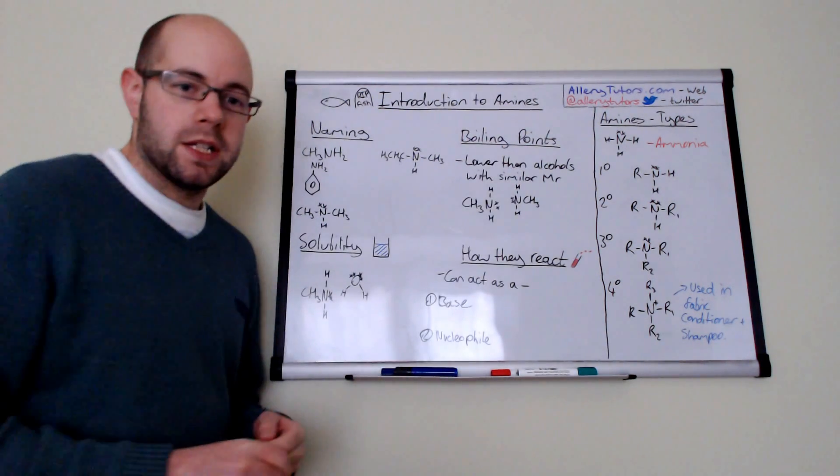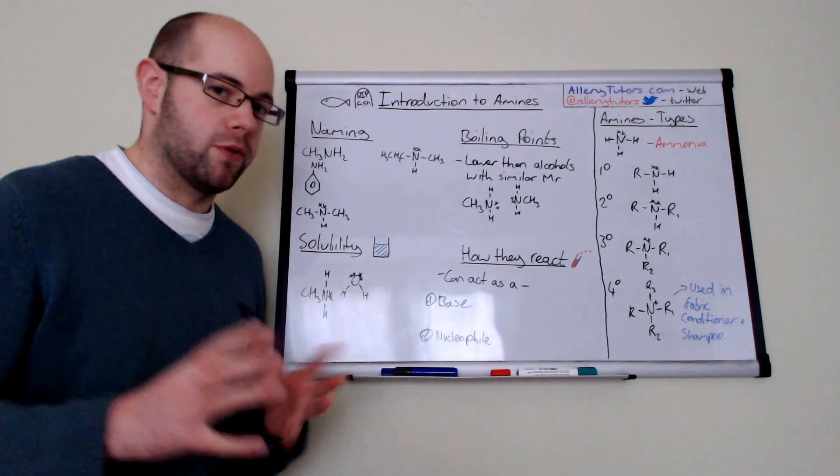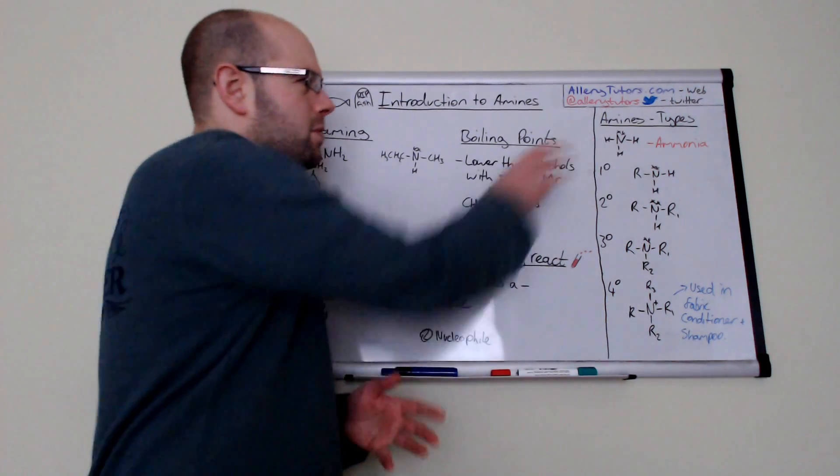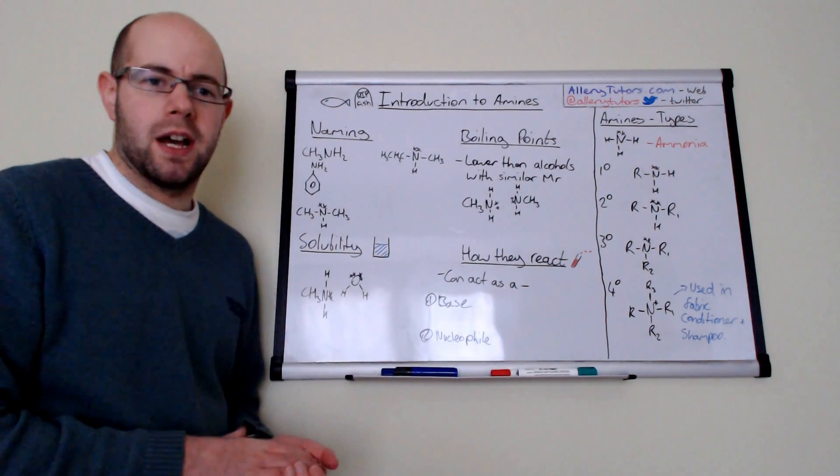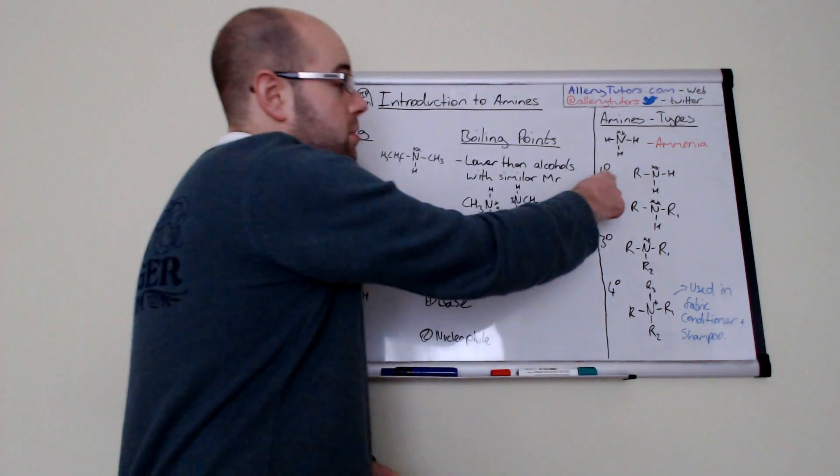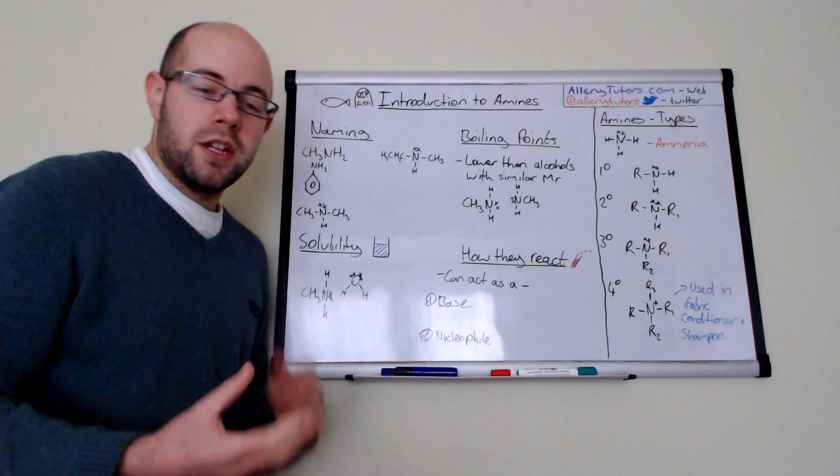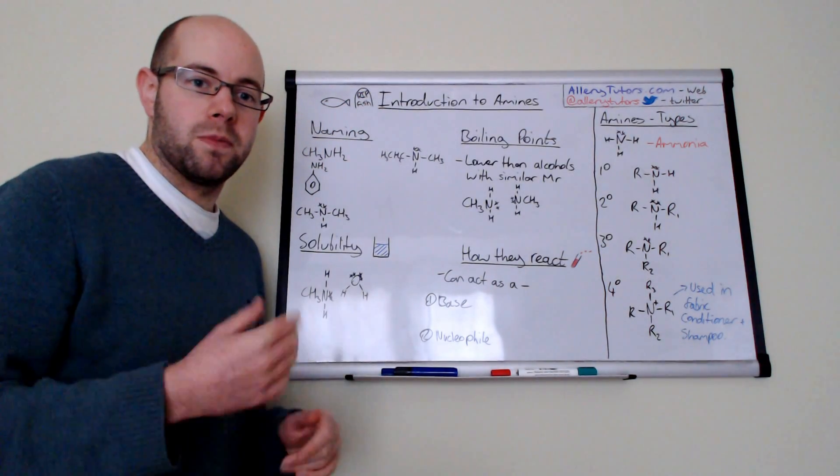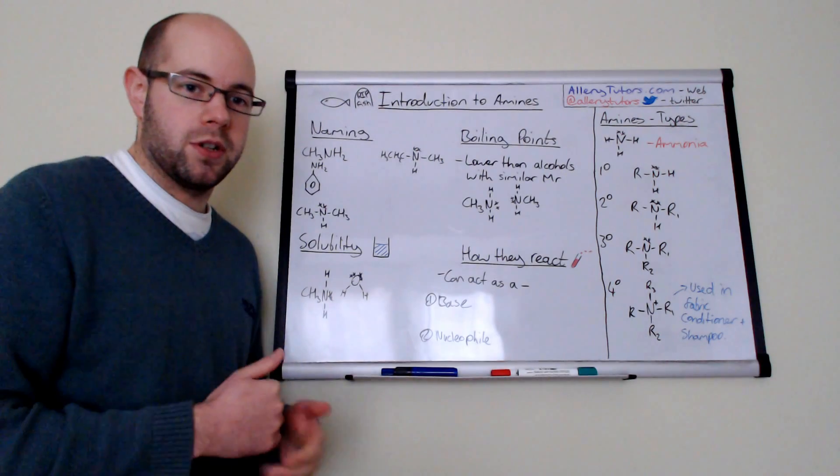Now the most basic type is ammonia. Ammonia is given the formula NH3 so it's not strictly classed as an amine but you do have other different types of amines and you can have different classes so we call them primary, secondary, tertiary and quaternary as well.